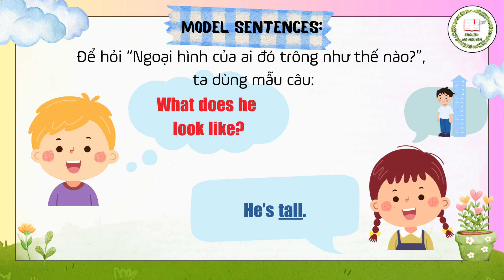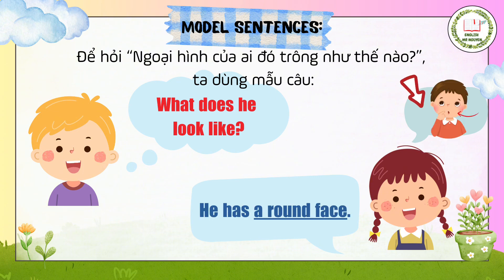Next, we come to model sentences. To ask what someone's appearance looks like — for example, what does he look like? — we use the sentence pattern: What does he look like? If he is tall, we answer: He's tall. If he has a round face, we answer: He has a round face.